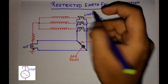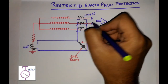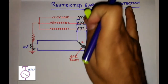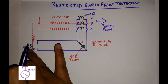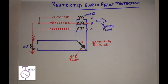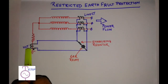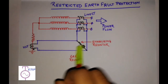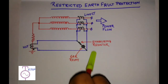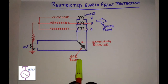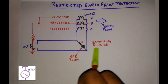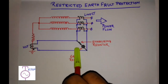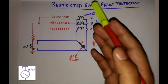If these are your transformer or generator terminals, connecting three line CTs and a neutral CT as shown will only detect earth faults inside the generator or transformer. The line CTs are residually connected and the neutral CT is connected in parallel with the line CTs. Where these two are connected together, the 64R — the restricted earth fault relay — is connected with a series stabilizing resistor.